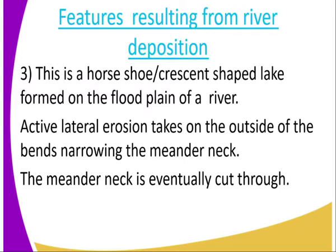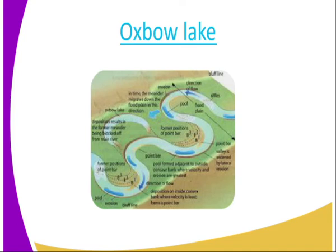The third feature is an oxbow lake, formed on the flood plain of the river. Active lateral erosion takes place on the outer side of the banks, narrowing the meander neck. The meander neck is eventually cut through. We start from the meandering of the river, then the meander neck is formed through continued erosion and deposition, and finally it cuts through.